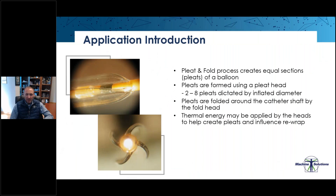From an application side of things, the pleat and fold process creates equal sections or pleats of a balloon. You take an inflated balloon, place it into the pleat head, the pleat head then closes and creates those pleats. Typically we're looking at between two to eight pleats, and that is really dictated by the inflated balloon's diameter. Those pleats are then folded around the catheter shaft utilizing the fold head, and you can also apply thermal energy throughout the process from the pleat or fold head.